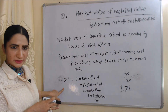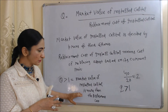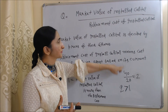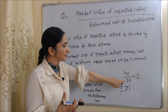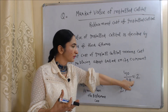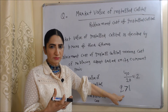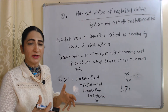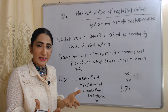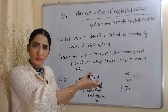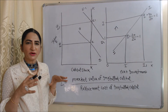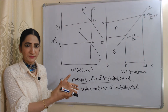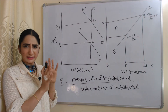If the value of Q is more than 1, that means the market value of installed capital is more than the replacement cost. This will motivate the firm to invest more because prices of their shares are high in the market compared to the cost of new investment. A firm will invest more if the market value of installed capital is high compared to replacement cost. Now, with the help of a diagram, we will clearly understand this concept.